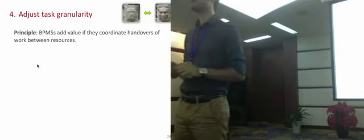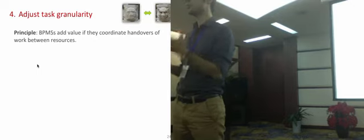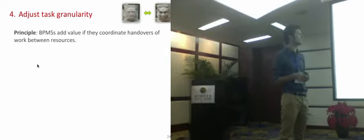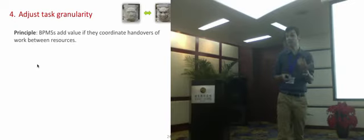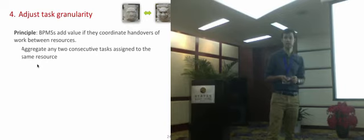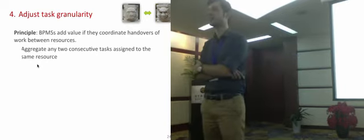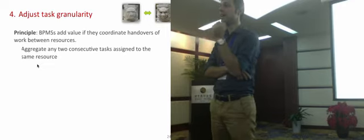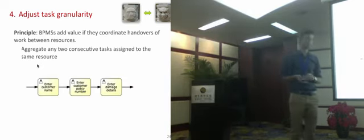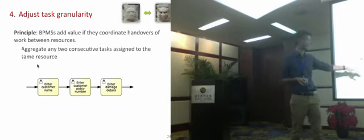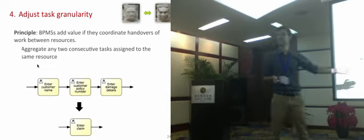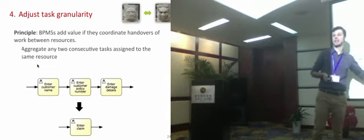The last step of part one — which leads to the to-be-executed process model — is to adjust the task granularity. The principle is that BPMSs add value only if they can coordinate and manage the handover of work between the resources involved in the business process. Whenever we see two or more consecutive tasks assigned to the same resource, those are good candidates for aggregation. For example, in a claim handling process, it makes no sense to have the same claims handler enter the customer name, policy number, and damage details as three separate tasks — we can aggregate these into one 'enter claim' task.